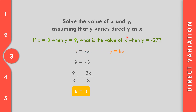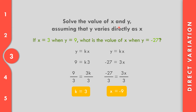Now let us find x when y equals negative 27. We substitute: negative 27 equals 3 times x. Dividing both sides by 3: negative 27 divided by 3 equals negative 9. So x equals negative 9.